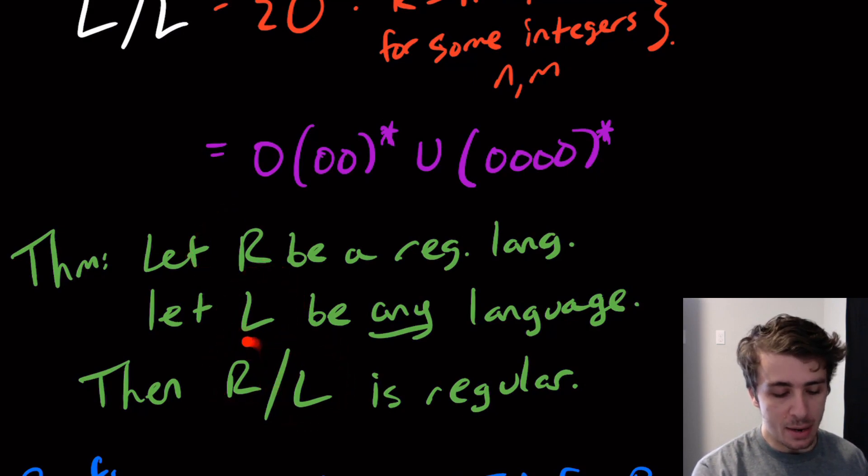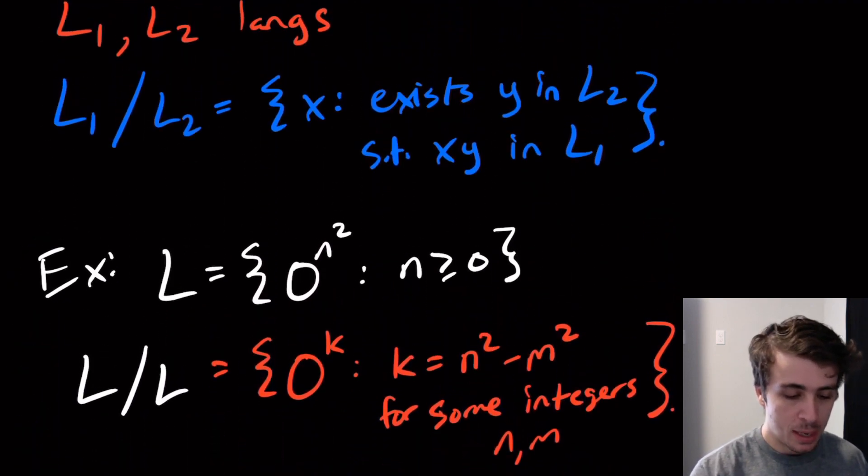Remember that the quotient is all the strings x such that if we have some string in the second language and their concatenation is in L1. So basically we're taking away any possible suffix, the end of the string that is in the second language, and then keeping the first piece of the string.